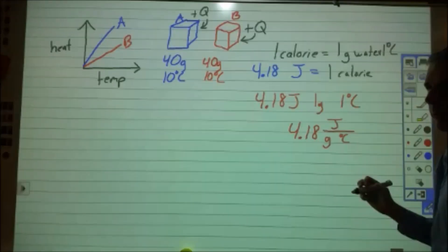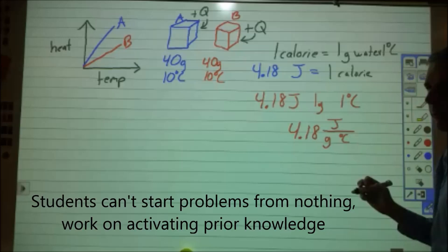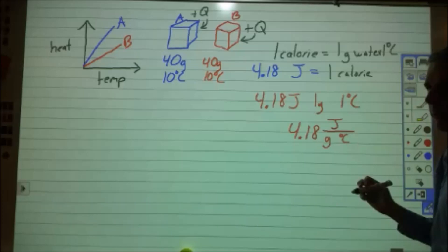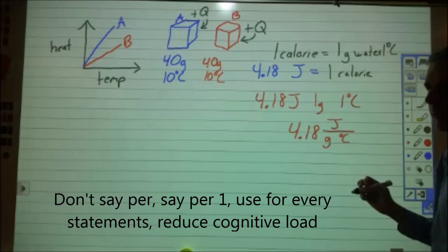A big difference here between the definition the teacher is providing now and in the bad teaching is that here the definition is not to be mimicked or reproduced — it's going to be used. The students are going to use this definition to organize their own thoughts. Notice the teacher uses per one gram and per one degree Celsius, which is phenomenally helpful for students to identify that for every one gram and every one degree Celsius, they require 4.18 joules to change that temperature.